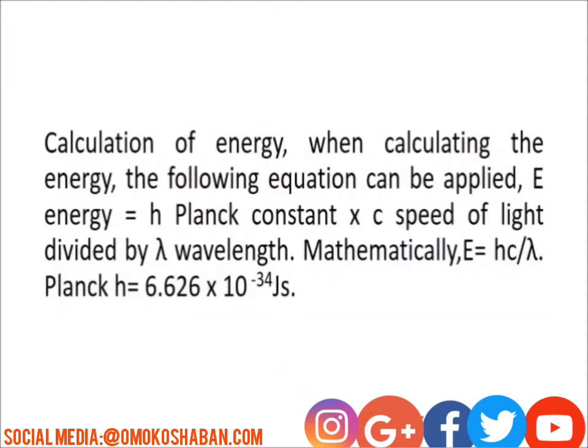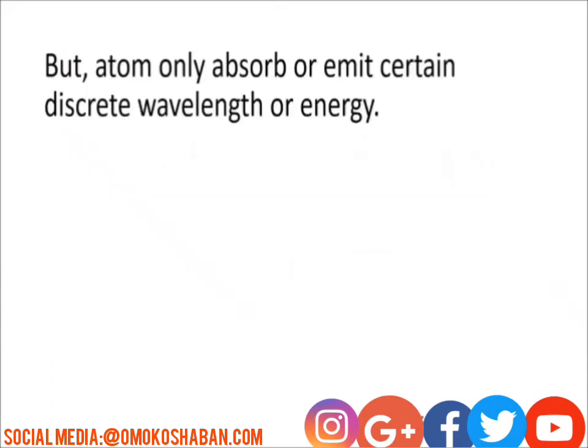Now, the calculations of energy. When calculating the energy, the following equation can be applied: E, which is the energy, equals H the Planck constant, times C the speed of light, divided by the wavelength. Mathematically, you have E equals HC over lambda. The Planck constant has a value of 6.626 × 10⁻³⁴ joule-seconds. Atoms only absorb or emit certain discrete wavelengths or energies, meaning that there is a group of energies or wavelengths which atoms absorb.